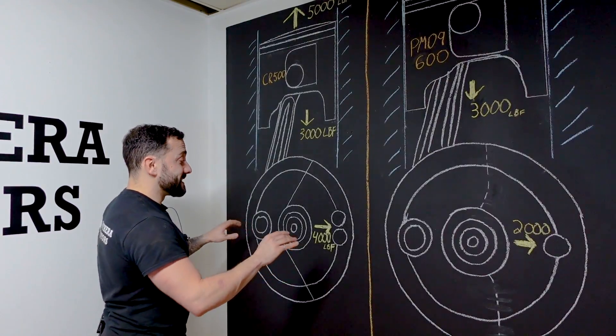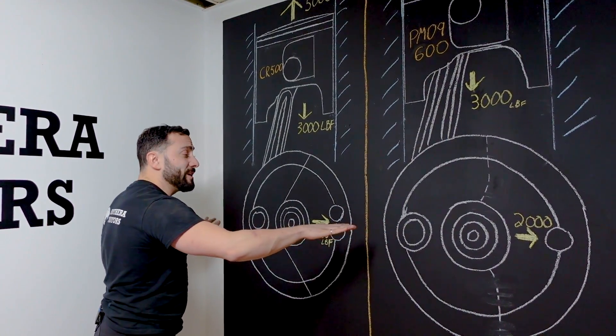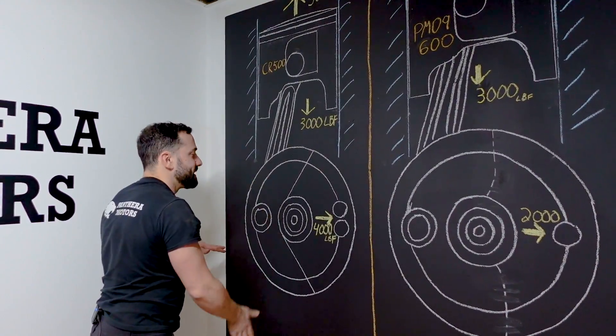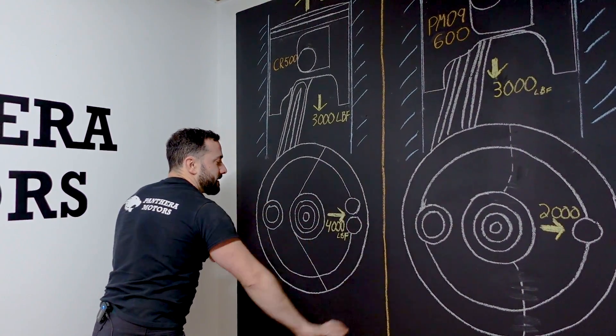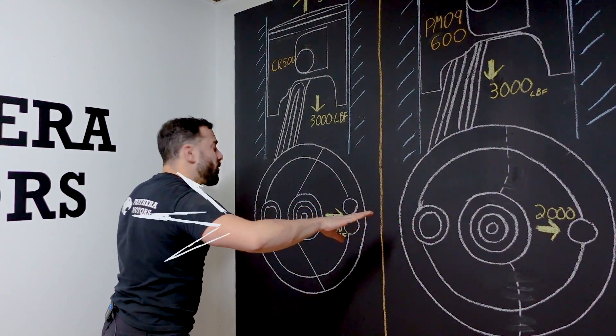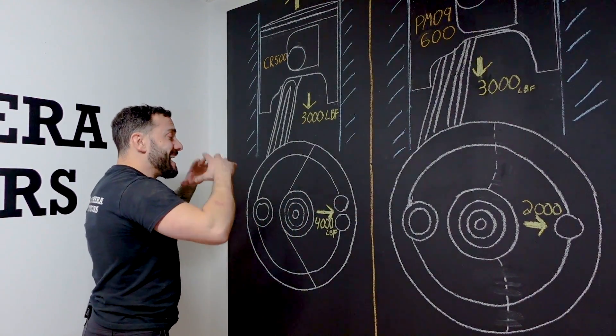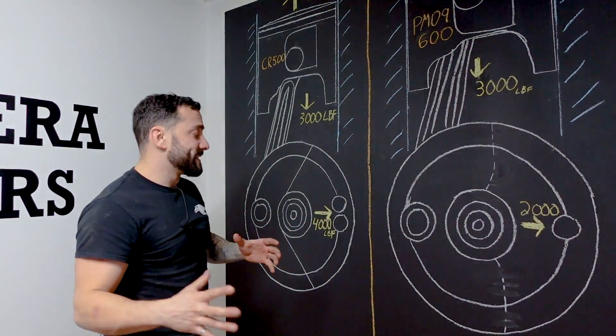Big problem created by that is at 9 o'clock and 3 o'clock, horizontally, where the piston is not going, it's only staying vertical, that counterweight is generating 4,000 pounds of force left and right. And that's a huge vibration in your single cylinder.